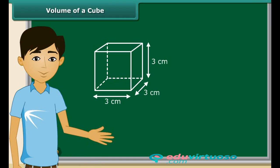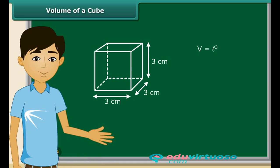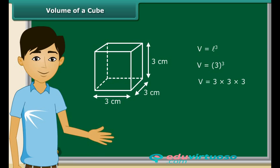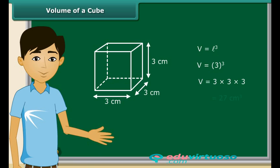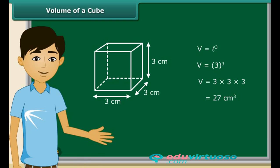Let's take a look at an example. Here we have a cube having length of each side equal to 3 centimeters. Let us find its volume using the formula V = l³. Since the length of each side is 3 centimeters, we substitute l with 3. So 3³ = 3 × 3 × 3 = 27. Since the unit for length is centimeter, the unit for volume will be cubic centimeter. Hence, the volume of this cube is 27 cubic centimeters.